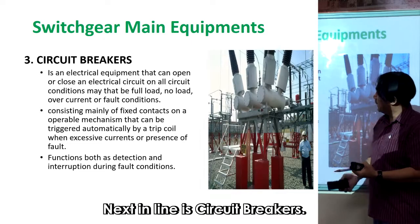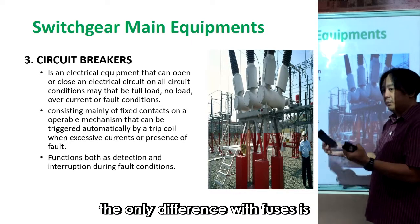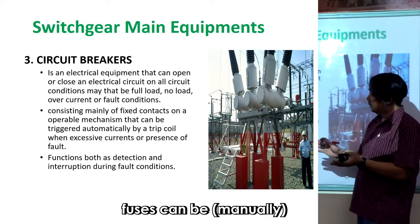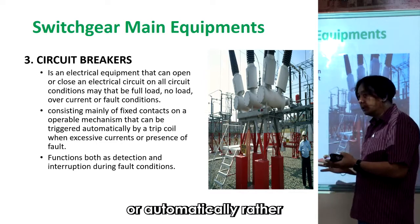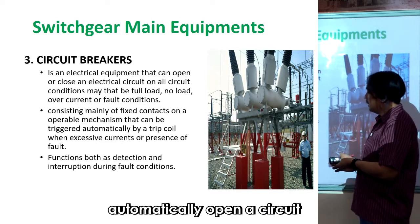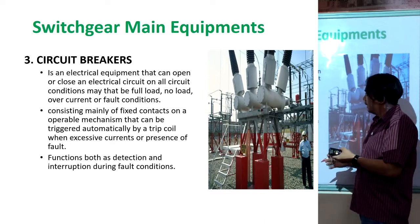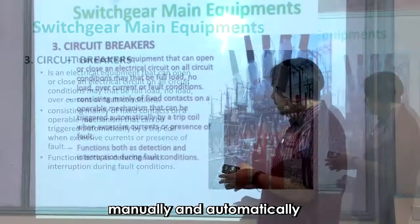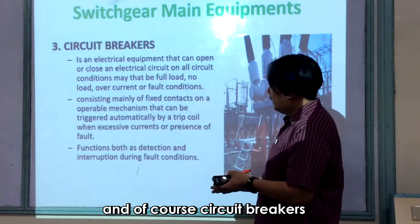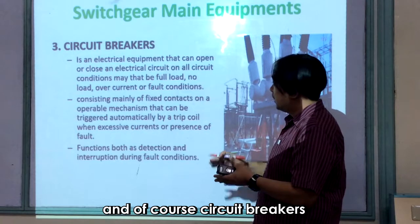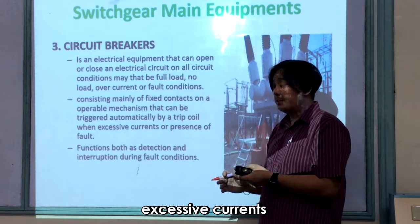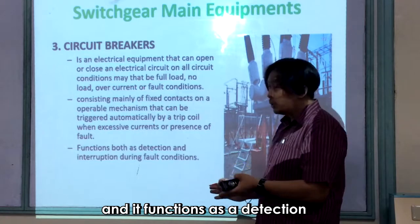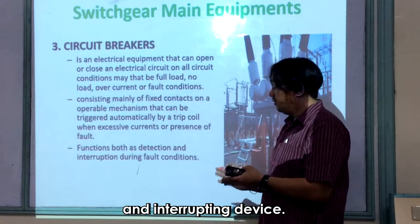Next are circuit breakers. The difference from fuses is that fuses automatically open a circuit, while a circuit breaker can do both manually and automatically. Circuit breakers handle larger excessive currents and function as both a detection and interrupting device.